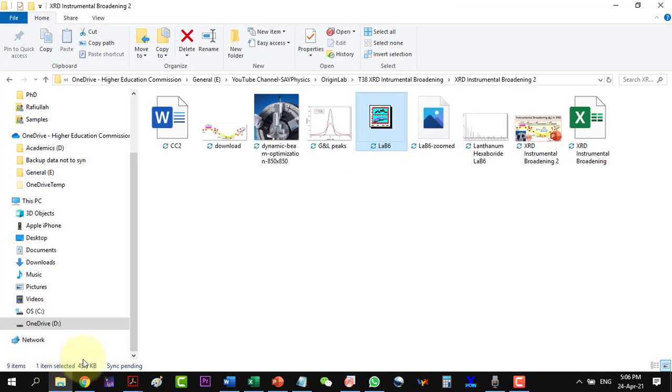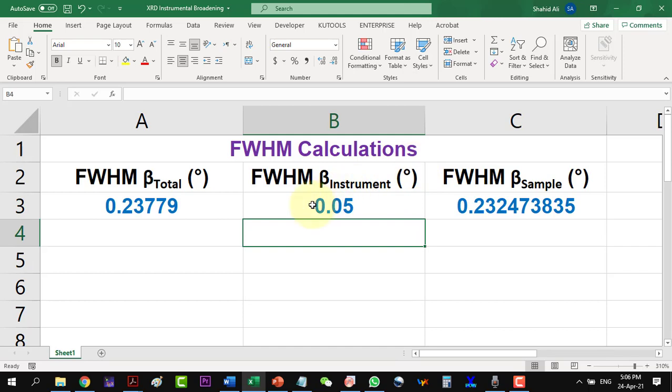Let's open the Excel template for calculations. This is the FWHM calculated from the sample. Here we will have to paste the FWHM value of the standard.